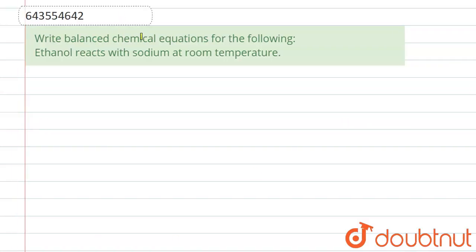have is: write balanced chemical equation for the following. We have ethanol reacts with sodium at room temperature. So let